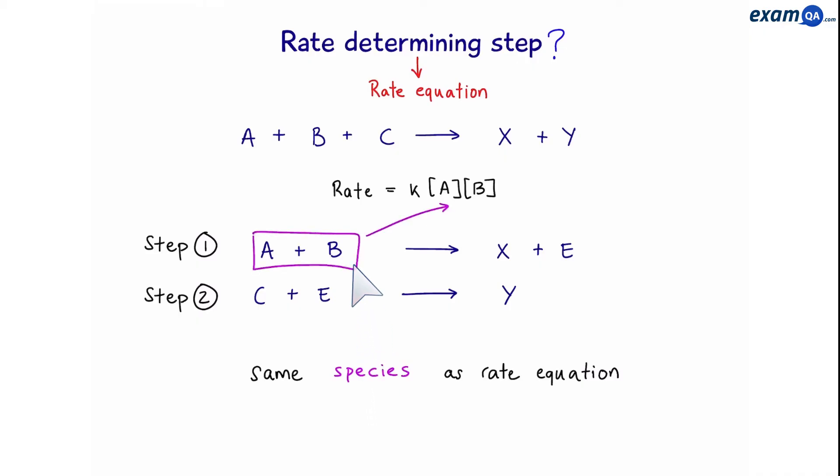In step 1, the reactants have A plus B. In step 2, we have C plus E. So, it's very clear that step 1 has the exact same species as the rate equation, which is 1A and 1B. And therefore, step 1 is the rate determining step.